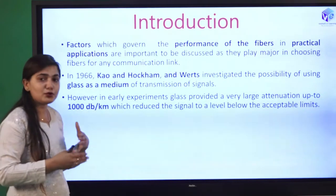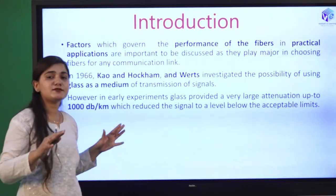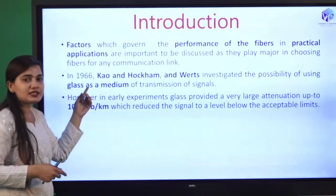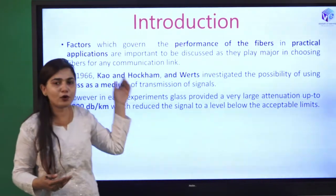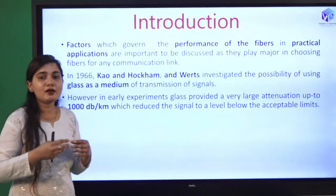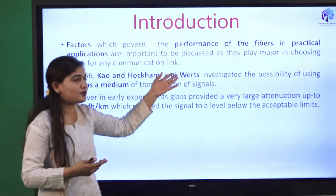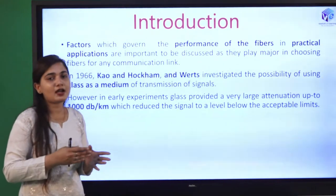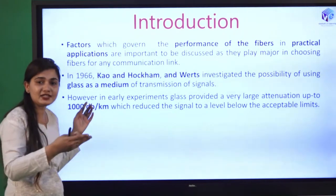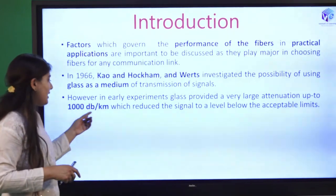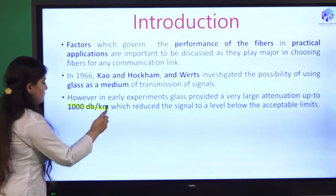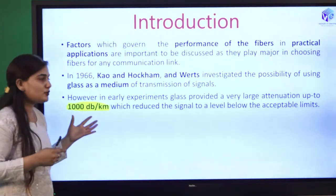We have to choose these factors very carefully, minimize them, and then we can do practical communication with the help of the optical fiber. In 1966, as I have already told you, Kao and Hockham were discovering the transmittance of light as a signal containing information. They found that glass can be used as a medium for propagation of light. But the problem was very high losses — 1000 dB per kilometer attenuation was present.